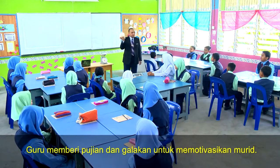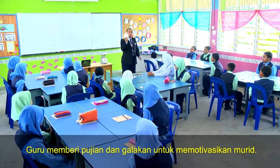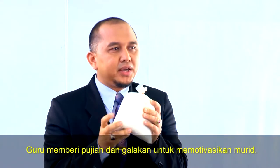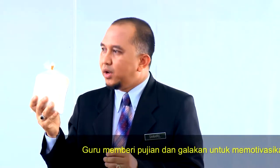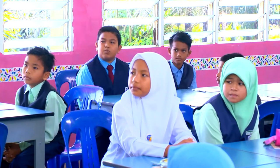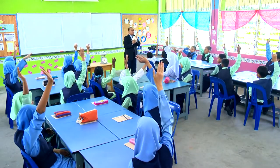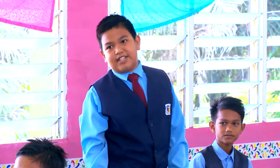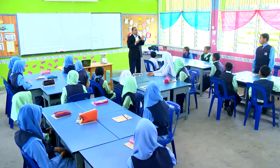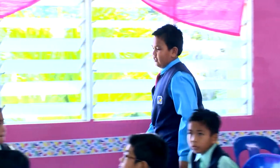Sekarang ini, sekiranya Encik Goh inginkan 1 per 5 kilogram daripada gula ini, bagaimanakah cara untuk Encik Goh dapatkannya? Siapa nak cuba? Muhammad, bagaimana cara mendapatkan? Kita perlu darapkan 1 per 5 darap 1,000, Encik Goh. Bagus, Muhammad. Boleh Muhammad tunjukkan bagaimana cara kita nak mendapatkan jawapan? Cuba tunjukkan jawapan pada kawan-kawan.